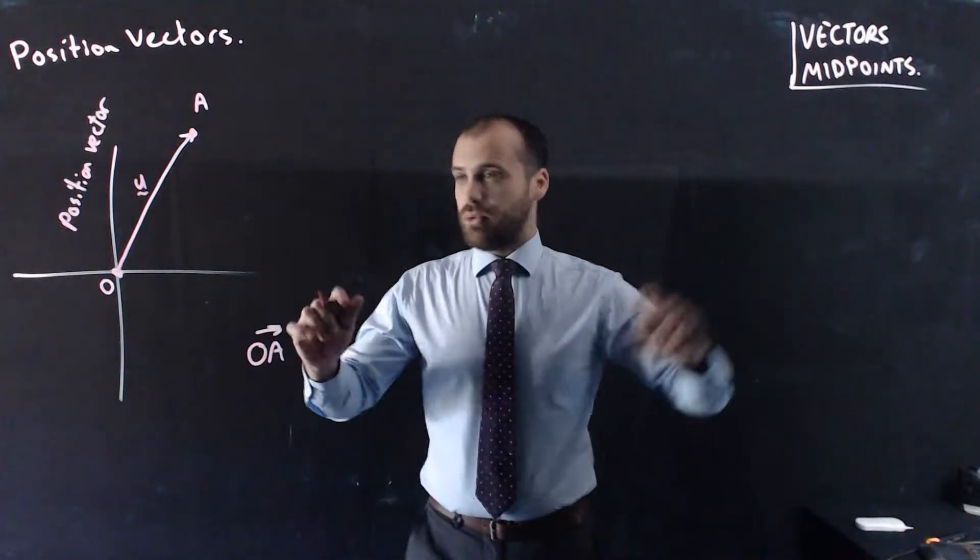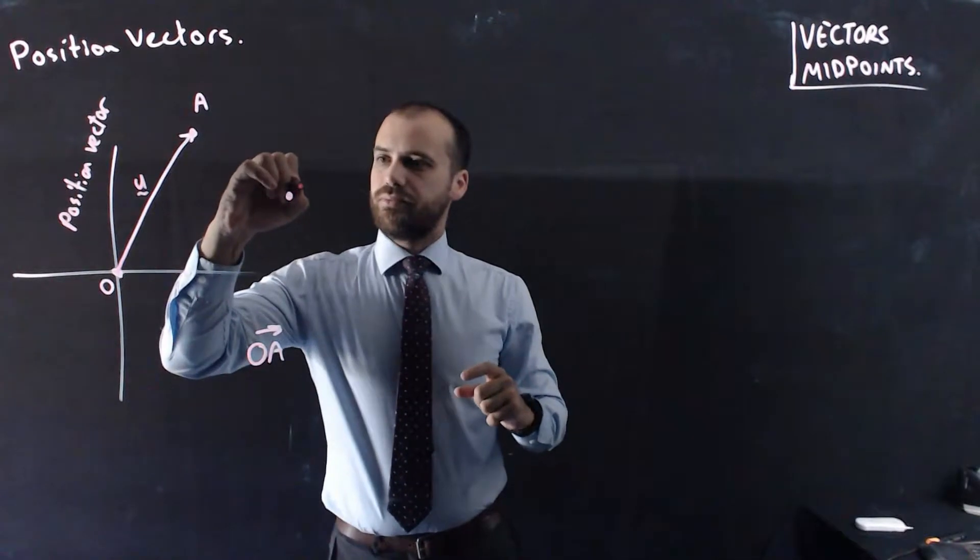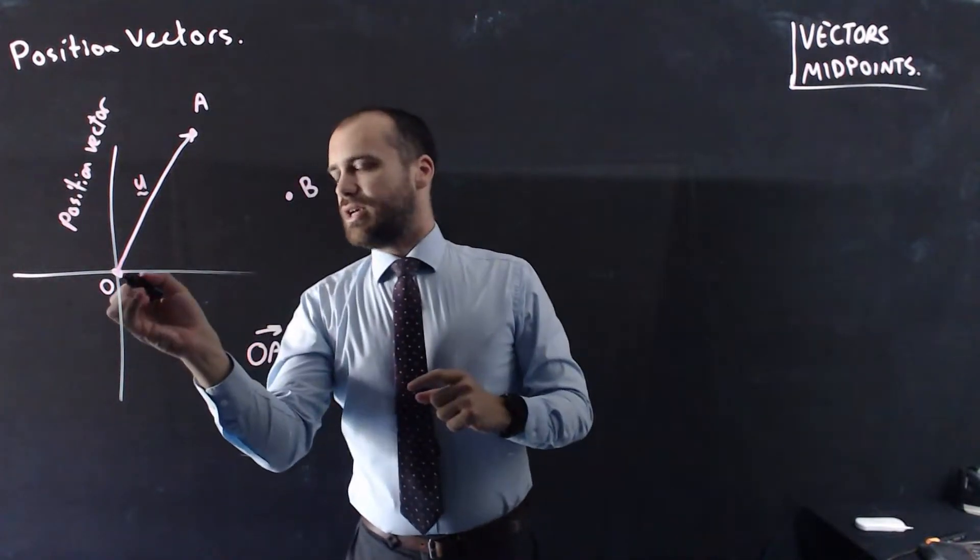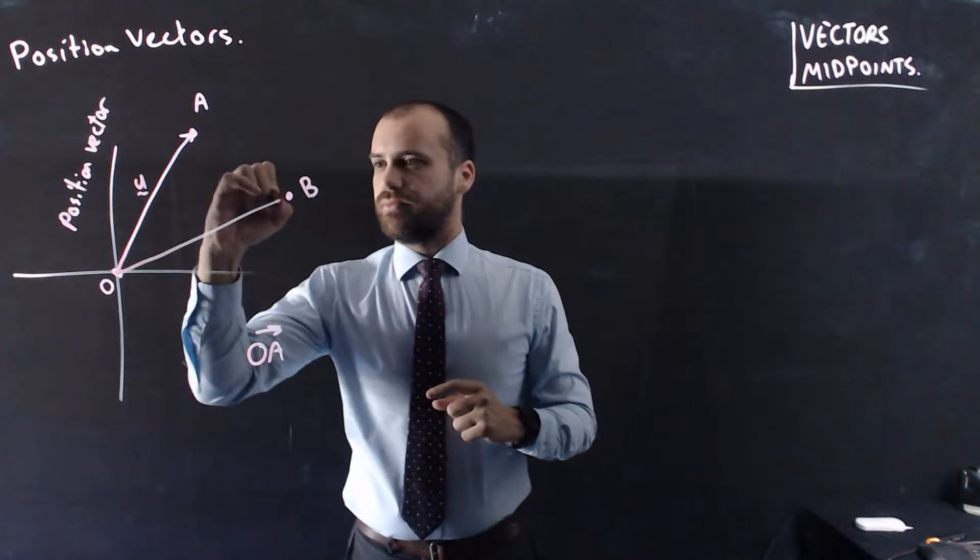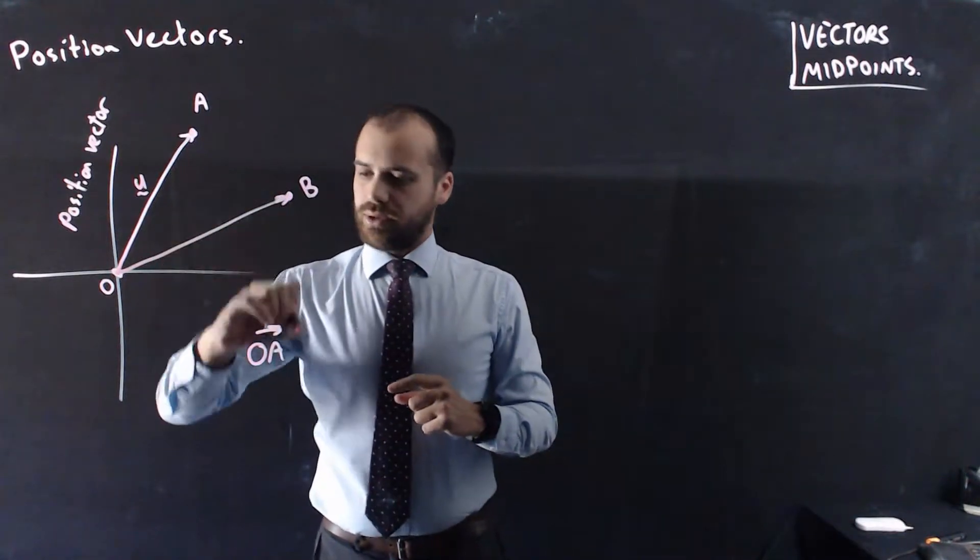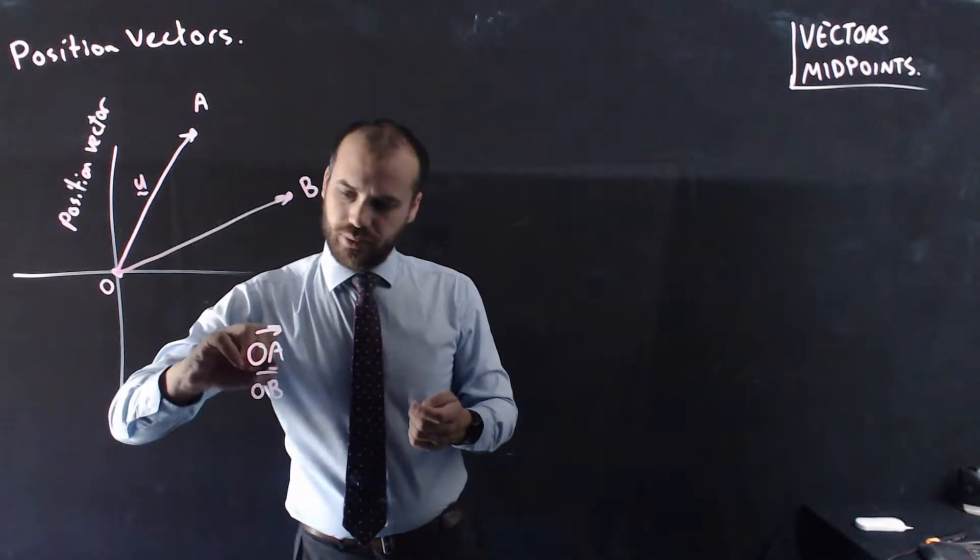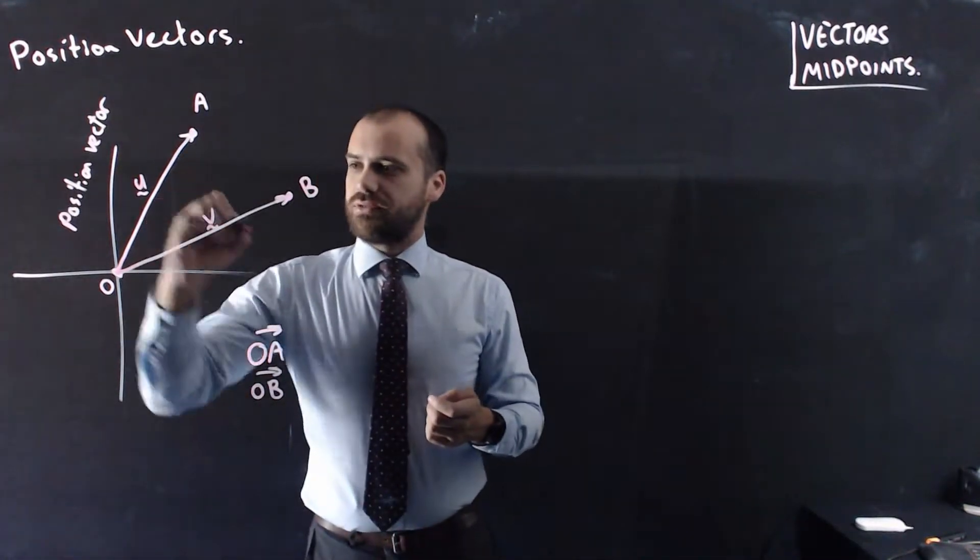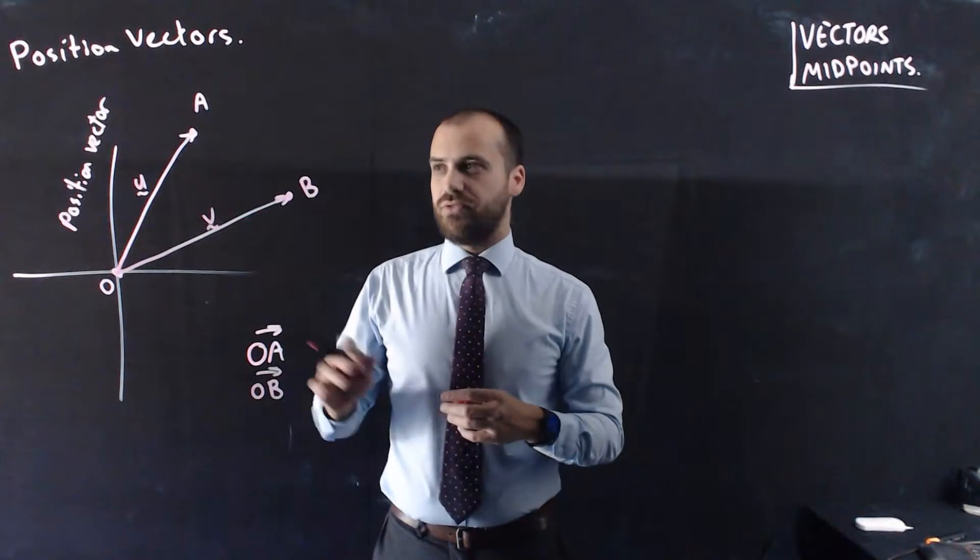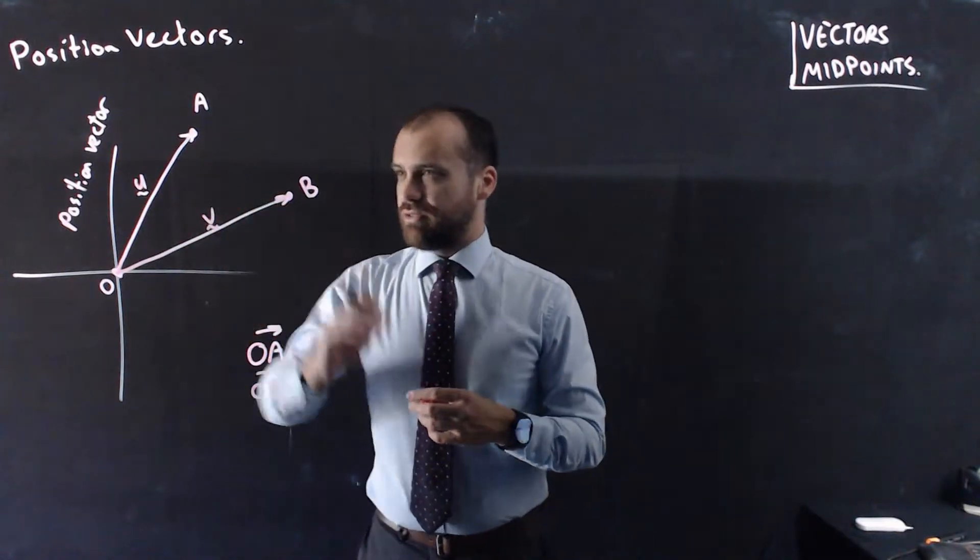Okay, so let's talk about another point. I'll call this one point B. And obviously, I can create another position vector from O to B. And that's OB arrow. And for the ease of talking about things, I'm going to call that vector V. So, I have vector U and vector V.